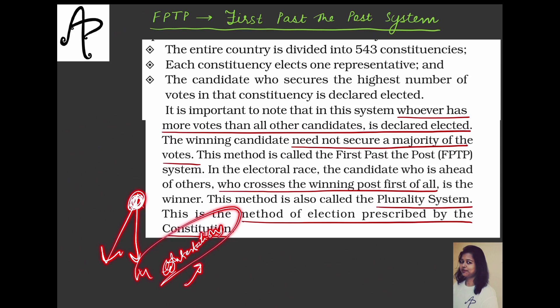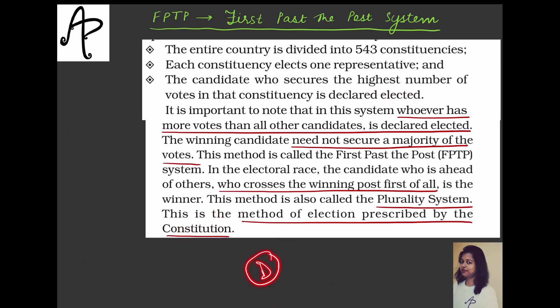We are not saying D got more than 50% of votes to win — no majority is required. D simply got more votes than A, B and C. That is the whole idea. It is not about majority or crossing 50%. It is just about getting more than the other candidates — that number can be anything.